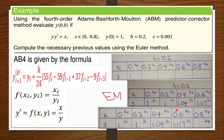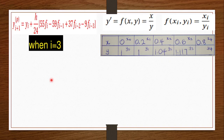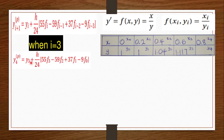To predict y4 we set i = 3. When i = 3, we can predict a value for y4 since i+1 = 4. The predictor formula gives y4 in terms of y3, h, f3, f2, f1, and f0. We know y3 = 1.117 from the table and h = 0.2, so now we need to find the f values.